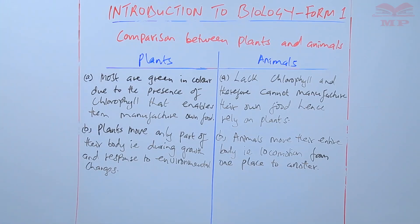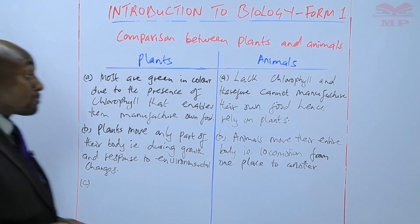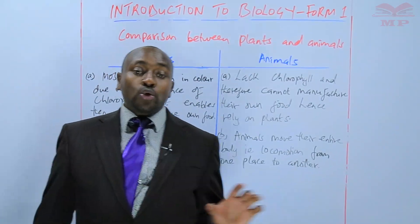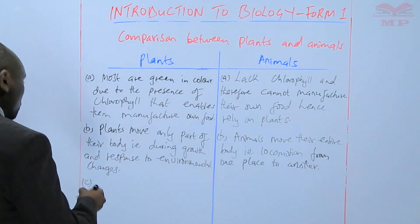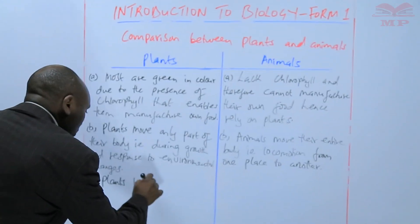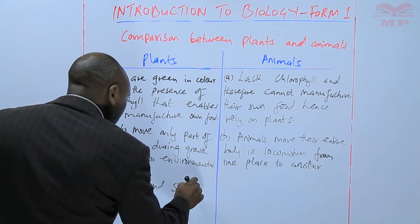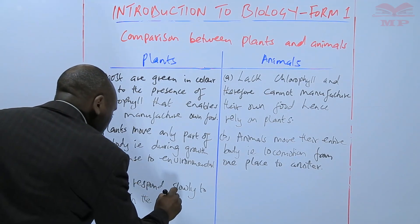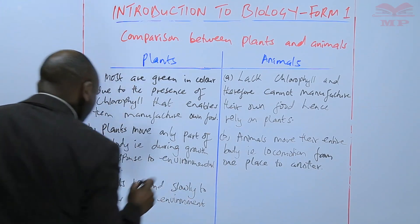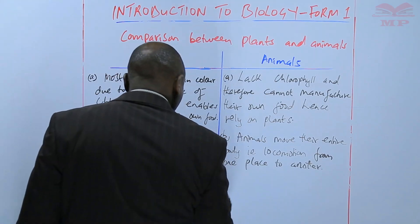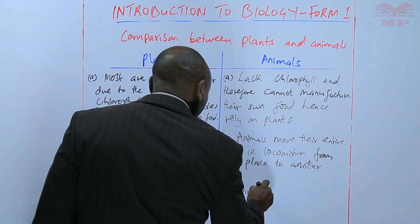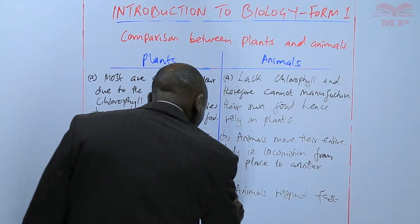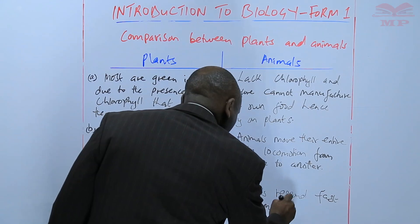Another difference is that when plants respond to the environment, they respond slowly. But animals respond very fast to any change that takes place in the environment. So plants respond slowly to changes in the environment, while animals respond fast to environmental changes.